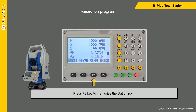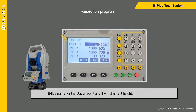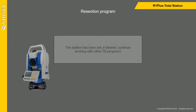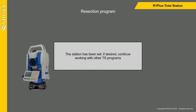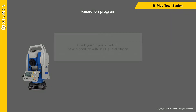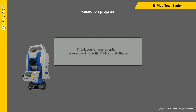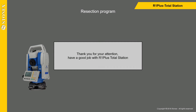Press the F3 key to memorize the station point. Edit a name for the station point and the instrument height, then press the F3 key. The station has now been set. If desired, continue working with other total station programs. Thank you for your attention — have a good job with our One Plus total station.